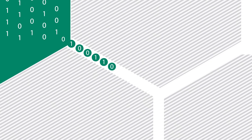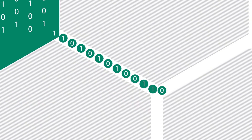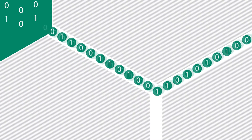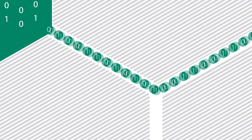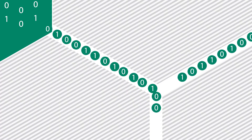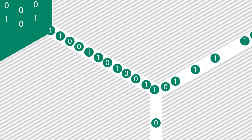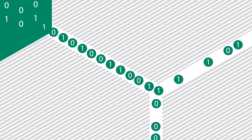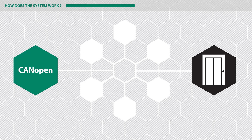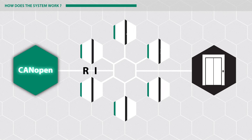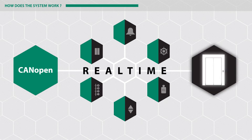The CAN bus is the channel for transmitting process messages. Integrated methods allow the prioritization of messages, and a real-time transmission of process messages is possible.